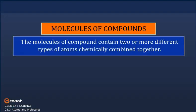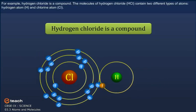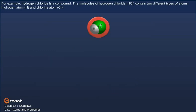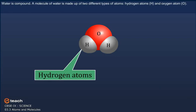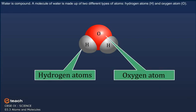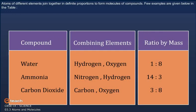Molecules of compounds: the molecules of a compound contain two or more different types of atoms chemically combined together. For example, hydrogen chloride HCl contains two different types of atoms — hydrogen atom H and chlorine atom Cl. Water is a compound; a molecule of water H2O is made up of two different types of atoms: hydrogen atoms H and oxygen atom O. Atoms of different elements join together in definite proportion to form molecules of compounds.